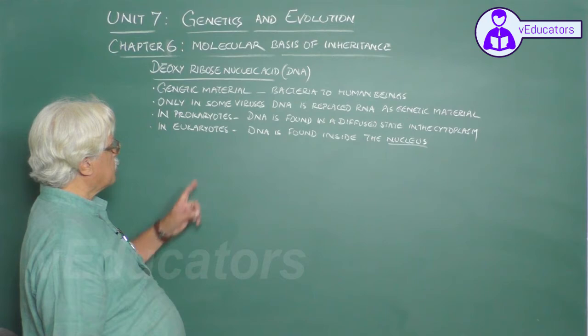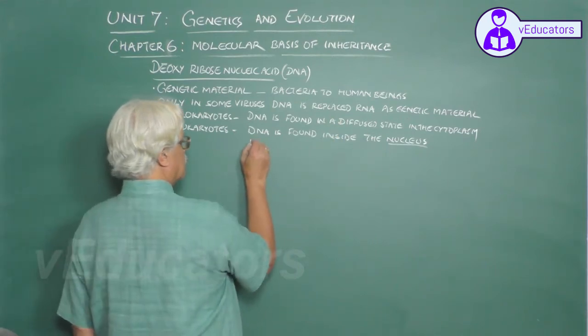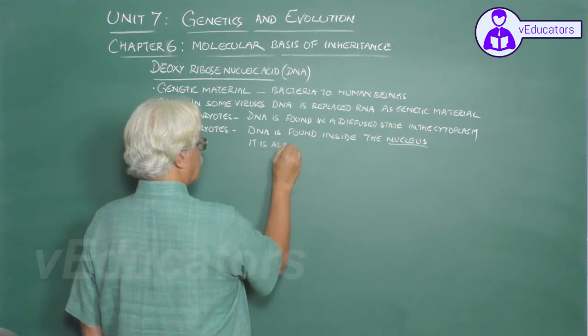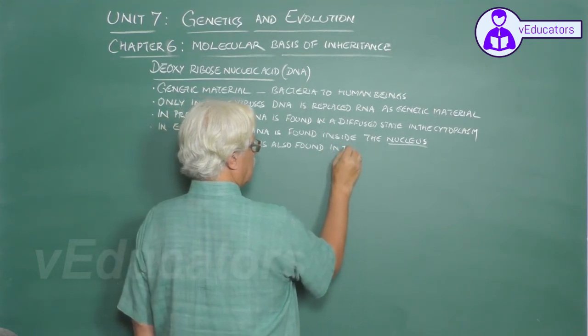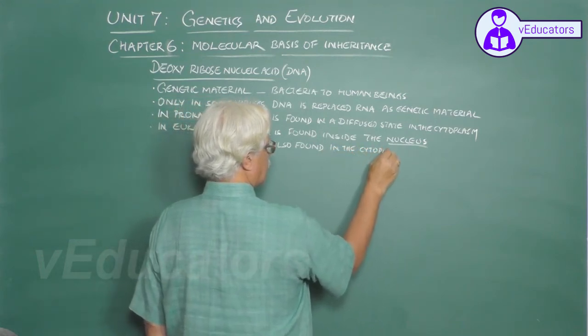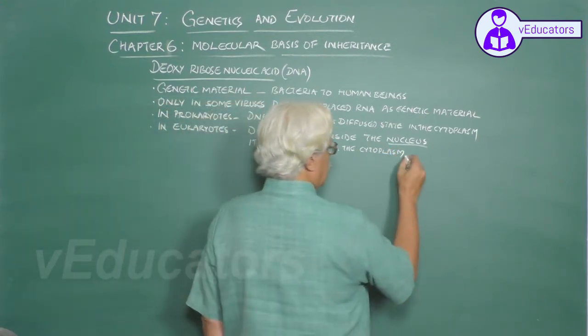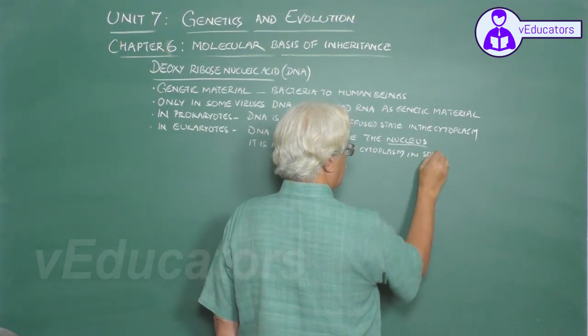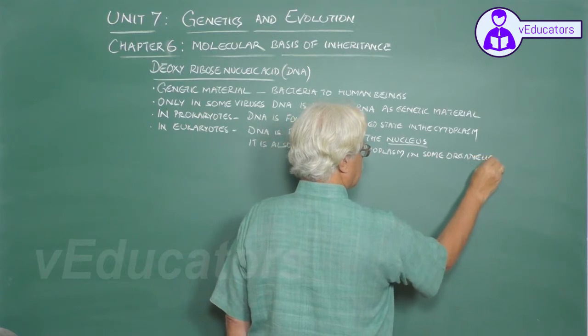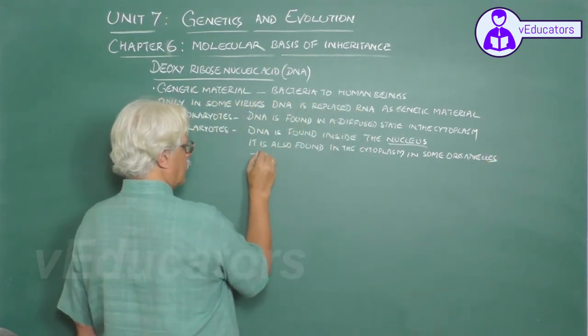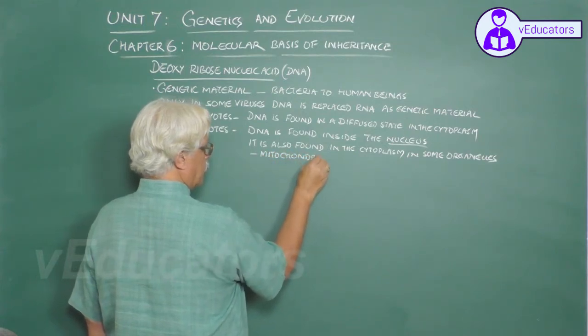But it does not mean that in eukaryotes DNA is found only inside the nucleus. It is also found in the cytoplasm in some organelles. For example, mitochondria, plastids, mitochondria and chloroplasts.